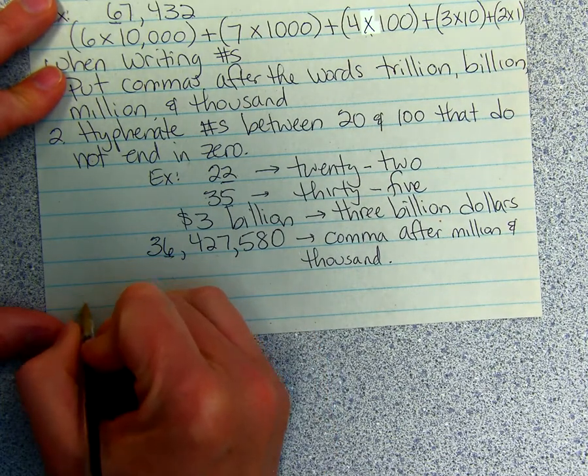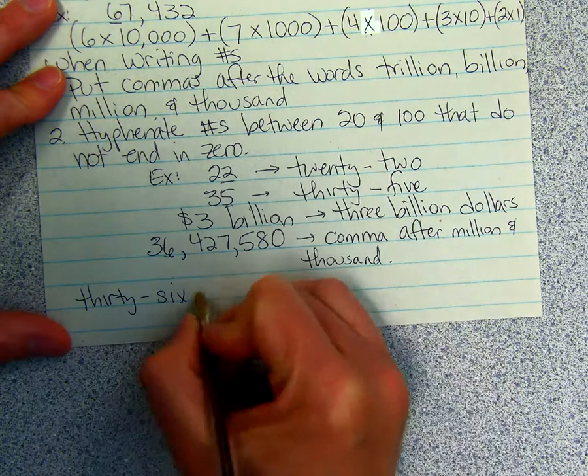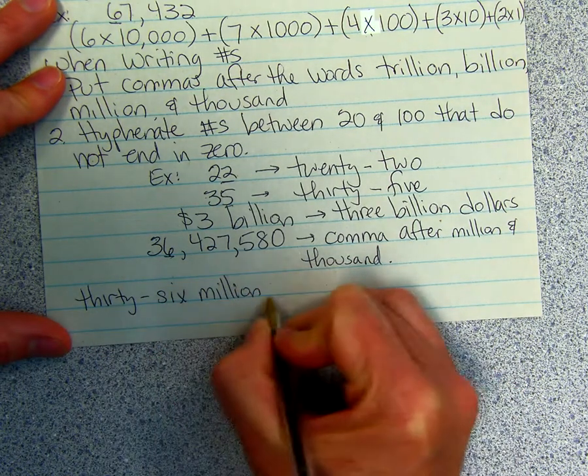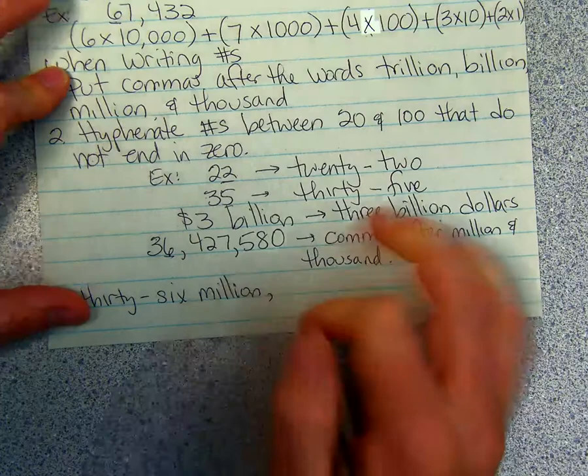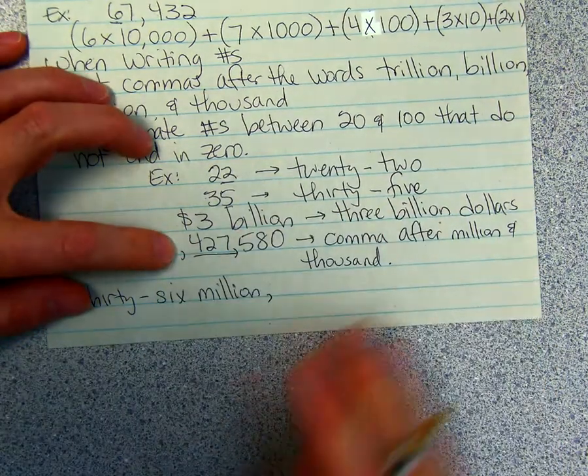Million. Then you put your comma in. Then you read this number as if there's no other numbers around it. Just read this number: 427. So you just write 427.